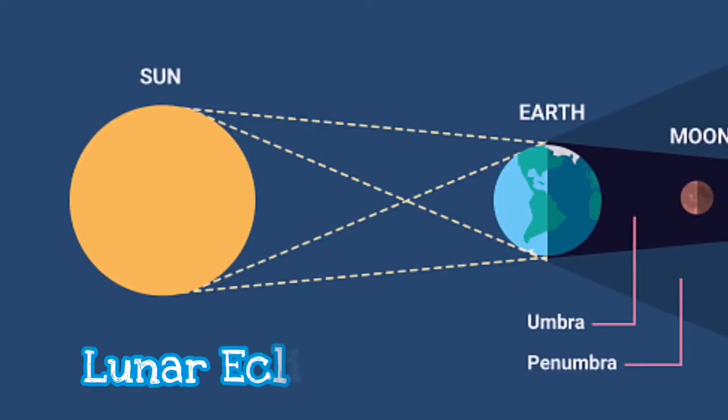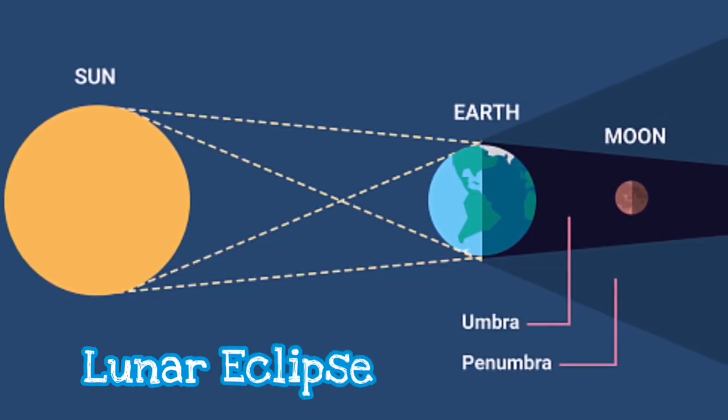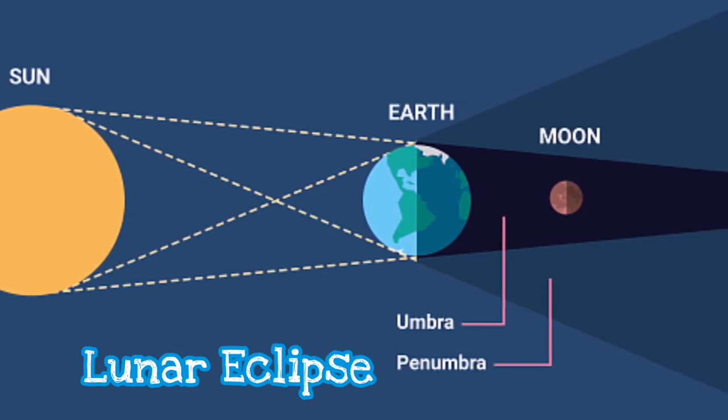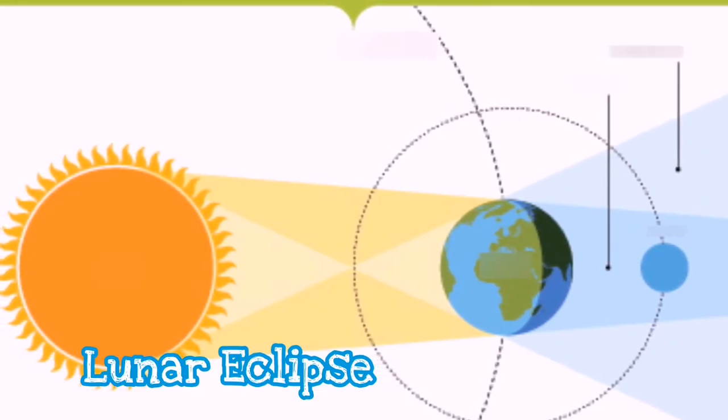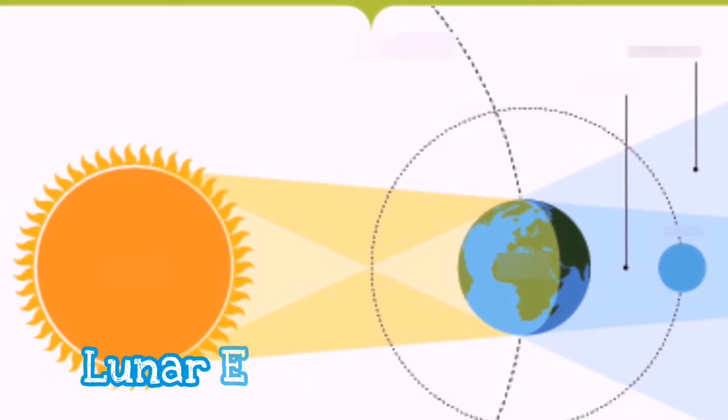Number two is the lunar eclipse. One of the things that caught the attention of the ancient people was the time in a month when the moon or part of it seemed to be covered by a shadow for a brief moment. A lunar eclipse occurs when the earth is between the moon and the sun. Earth casts a shadow on the moon.